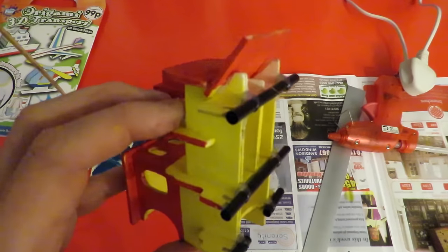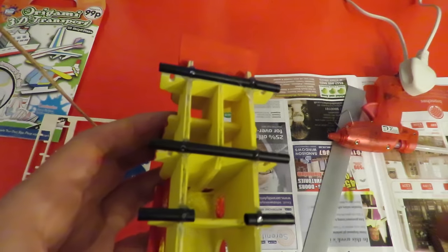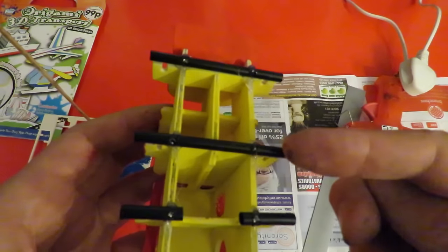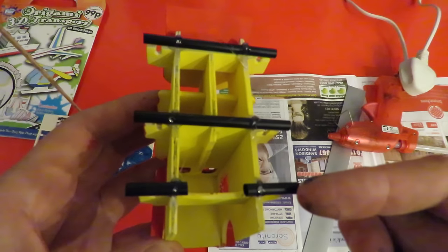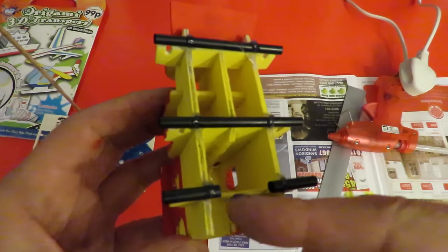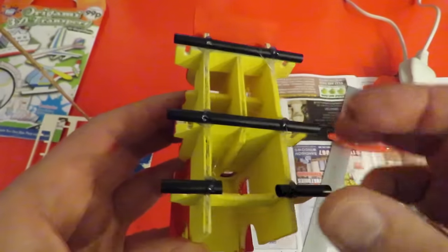That's the drinking straw hot glued in place. So we've got two straight through axles and two stub axle tubes, so we can connect the rubber band in the middle.